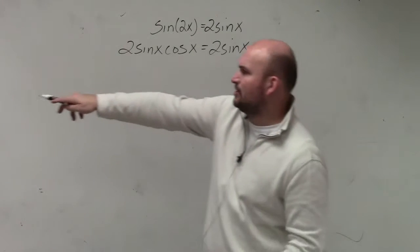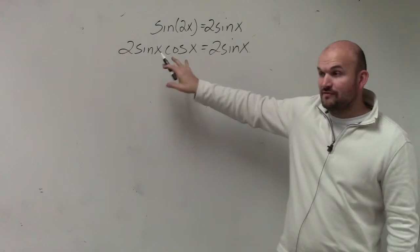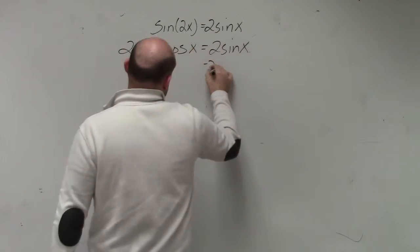So I used my double angle formula, which is 2sin(x)cos(x). Now to solve this, I've got to separate. I've got to get these to the same side.